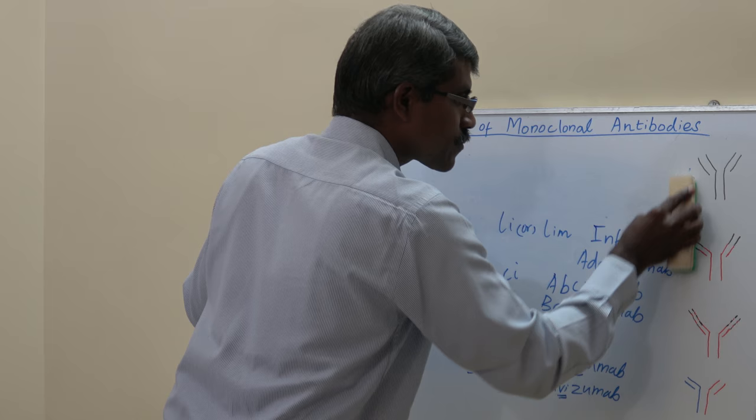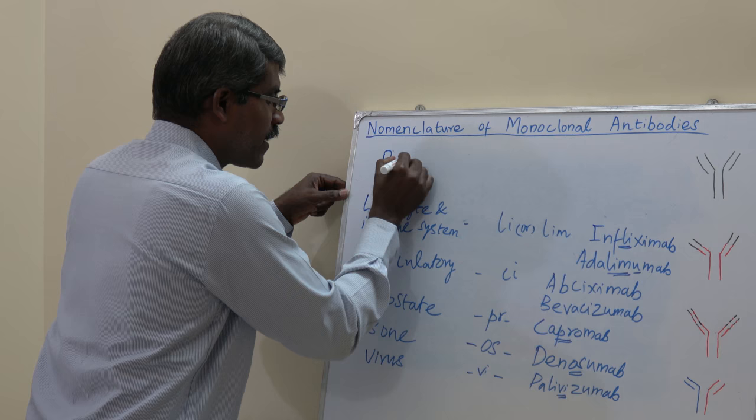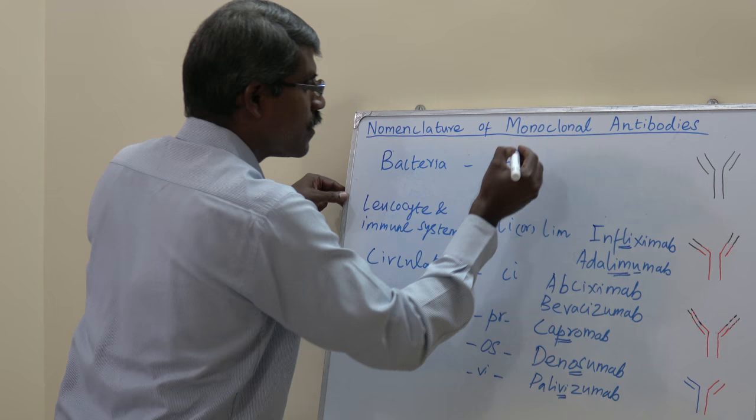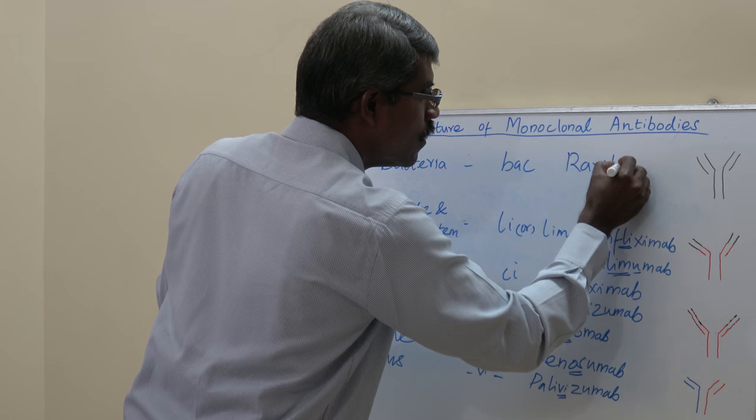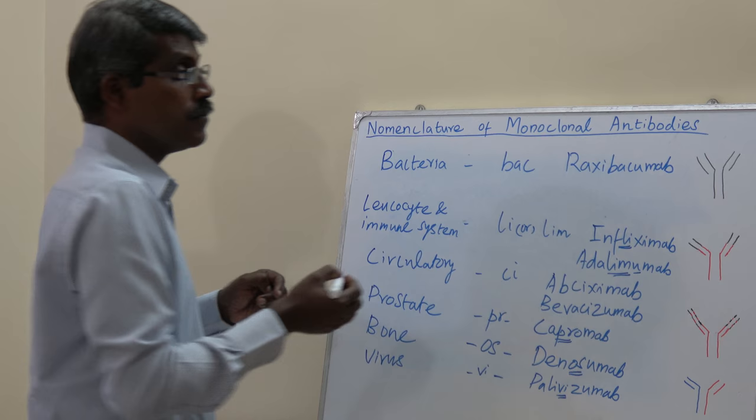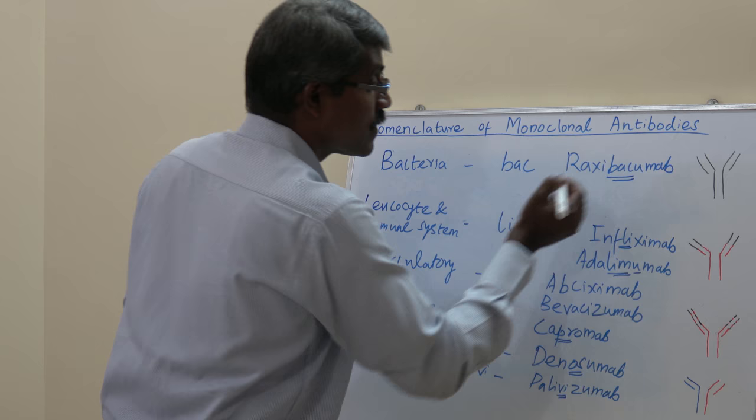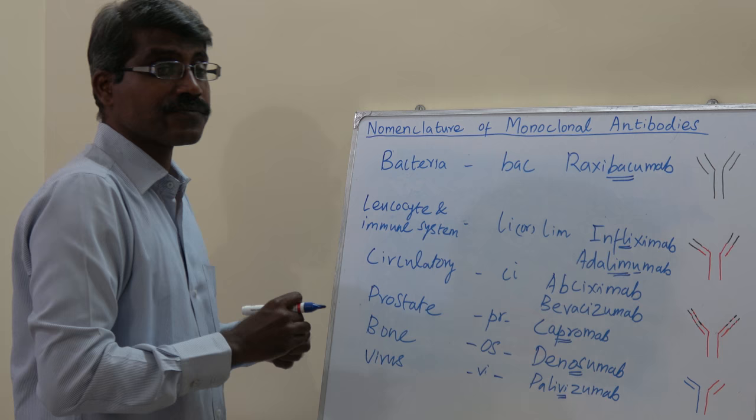If the target is bacteria, the infix 'bac' is used. For example, raxibacumab contains 'u' (fully human) and 'bac' (bacteria) — it is a monoclonal antibody targeted against Bacillus anthracis.